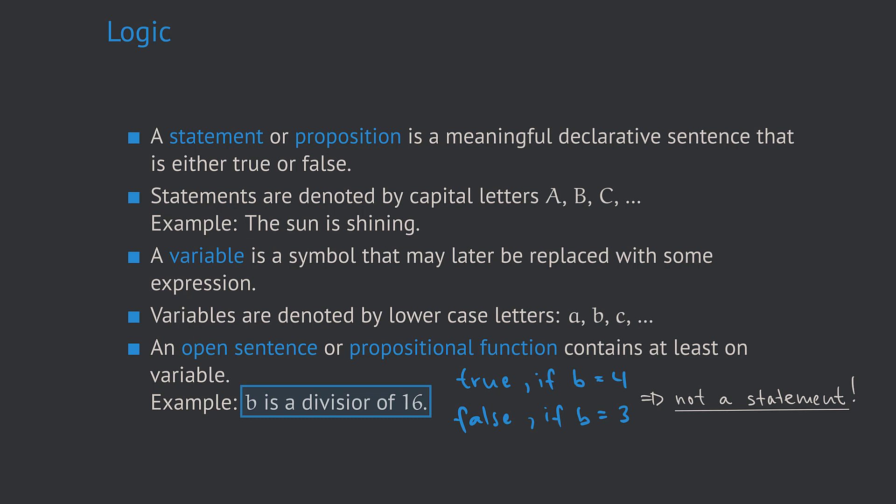There is, however, an easy way to turn an open sentence into a statement by using a process called quantification. Quantification means that an open sentence containing a variable is replaced by the statement saying 'for all possible values of the variable the open sentence containing the variable holds.' A quick way to write this down is by using the so-called universal quantifier, which looks like an inverted capital A and is read like 'for all x.'